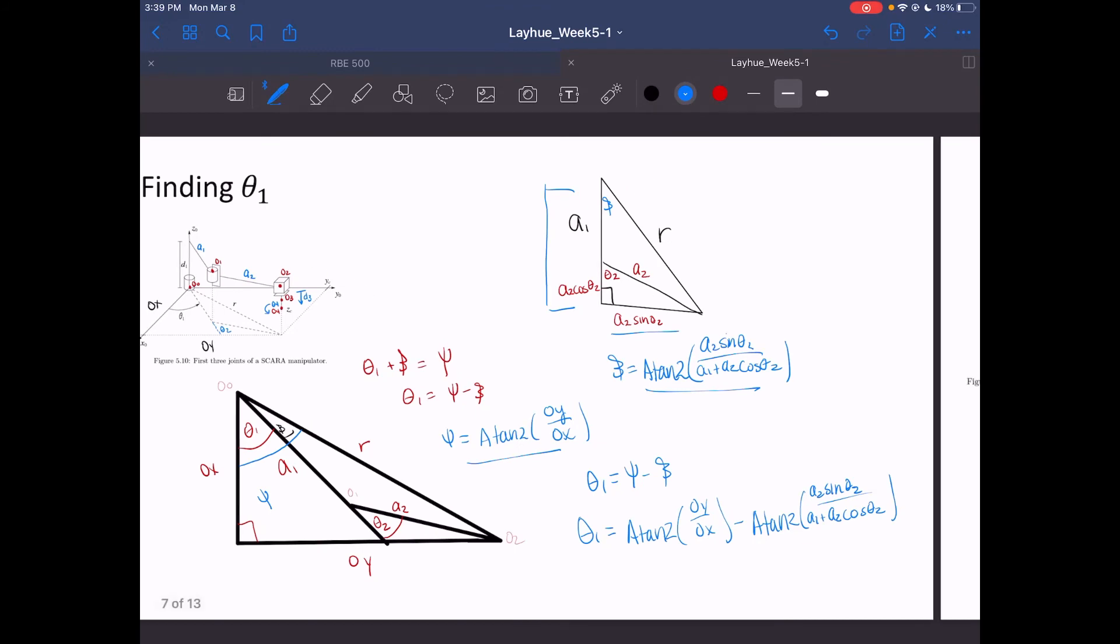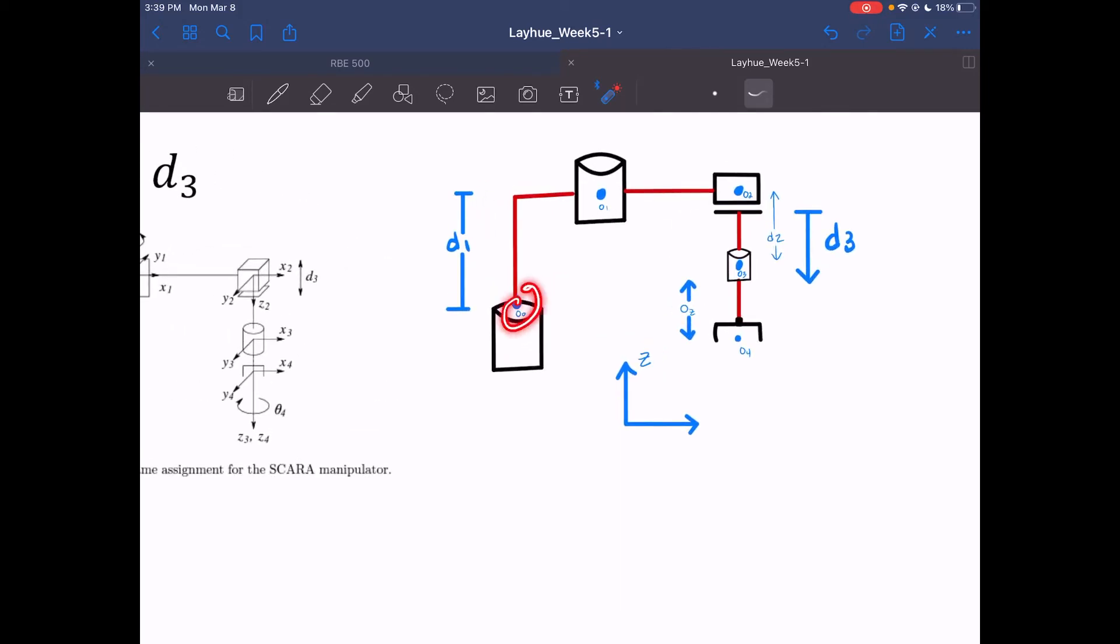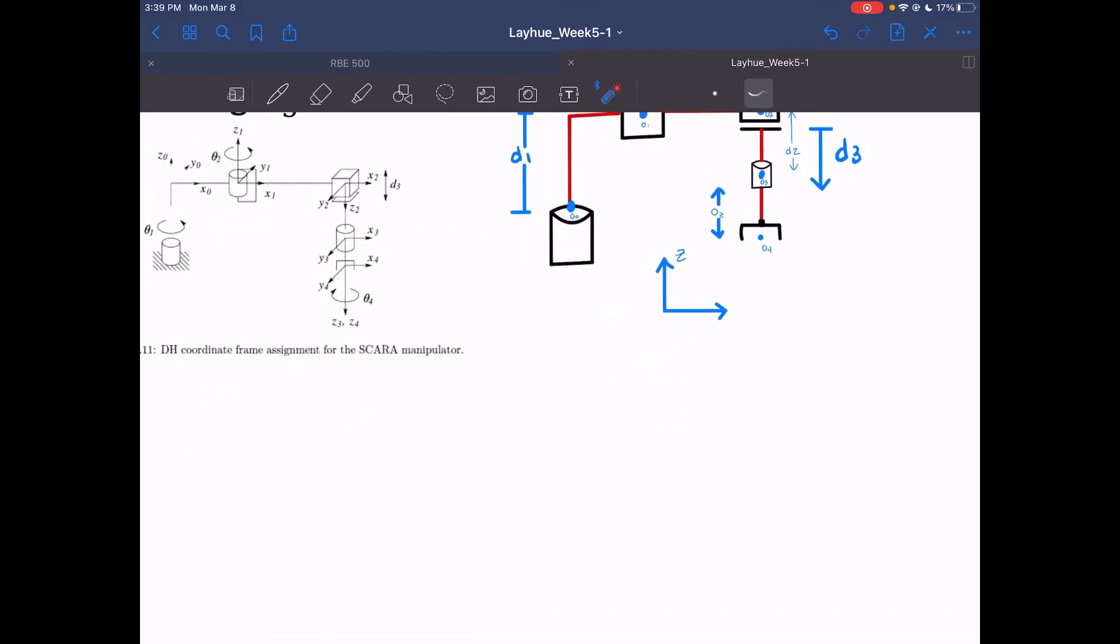And now we can work towards our third variable, which is D3. I have drawn this additional diagram—this is a side view of what's going on here, and I provided this new figure to give that different perspective. One thing to note, we know D1 is the distance between frame 0 to frame 1, and then we designate the distance between frame 2 and frame 3 as D2. D3 is the variable we're looking for, and then OZ is just the distance between the revolute joint to the center of the end effector.